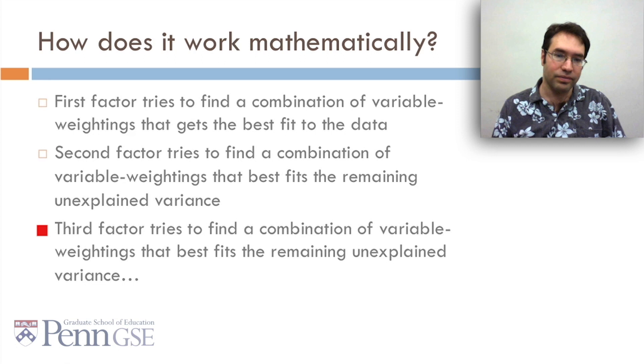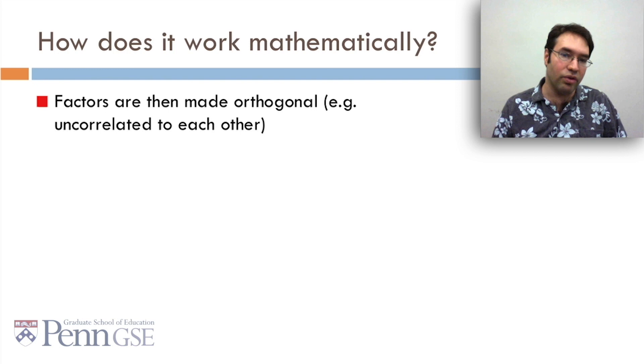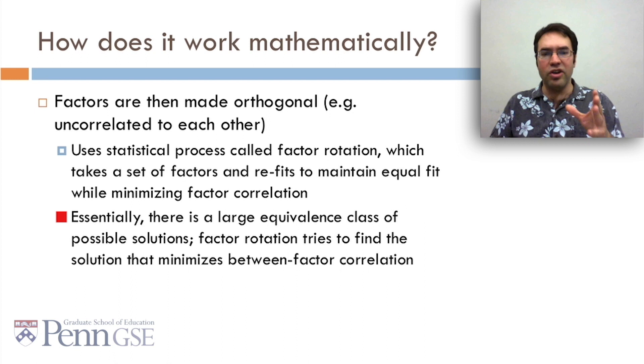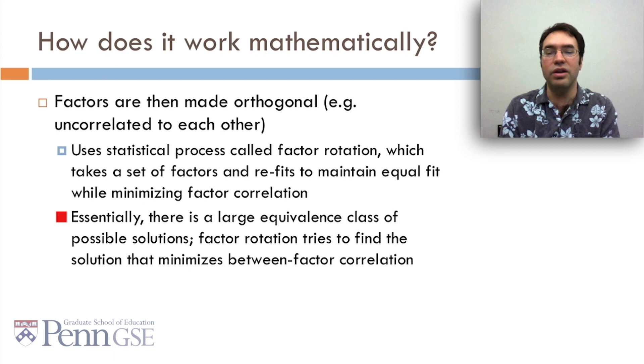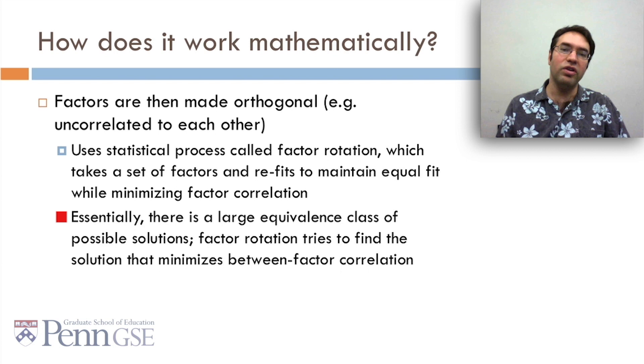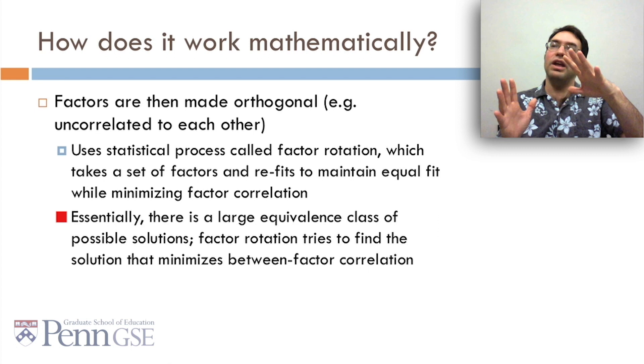You then make the factors orthogonal, or in other words, uncorrelated to one another. How do we do that? Well, we use a statistical process that I'm not going to go into today, called factor rotation, which takes a set of factors and refits to maintain equal fit while minimizing the factor correlation. Essentially, there's going to be a large equivalence class of potential solutions. Sets of, for example, three linear regression equations that each do an equally good job of fitting the variance. And factor rotation tries to find the solution that minimizes the correlation between the factors. So it's going to try to find factors that equally well fit all the data while correlating to each other as little as possible. So trying to get orthogonal, one that goes this way, one that goes this way, and one that goes this way.